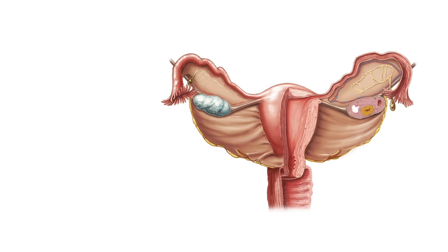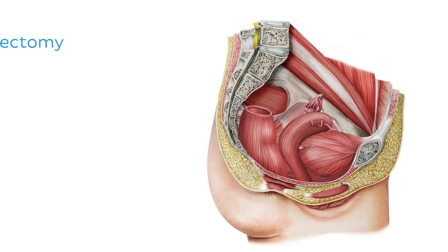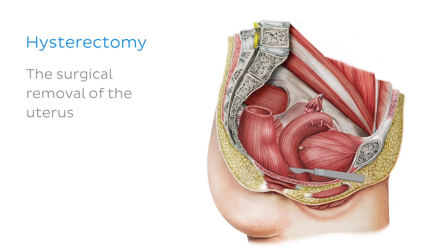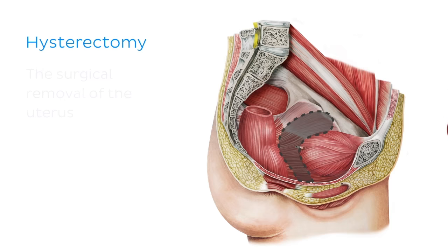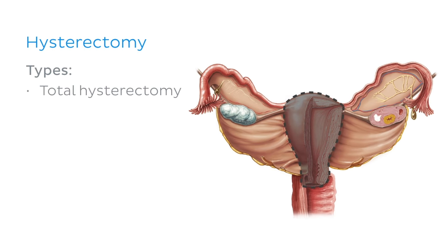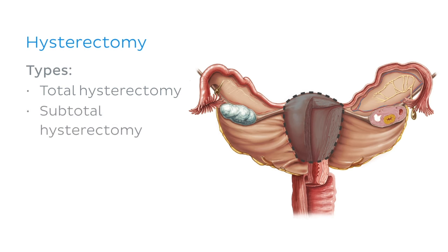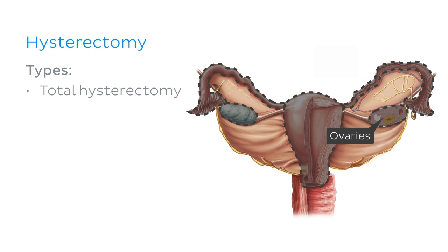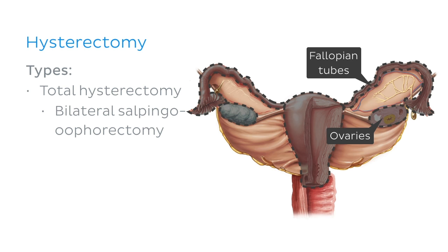Now that we're clued up on the uterus and its functions, let's get clinical. In today's clinical notes, we're going to talk about a procedure known as a hysterectomy. A hysterectomy is the surgical removal of the uterus and there are several types. If the entire uterus is removed, it is a total hysterectomy. If only part of the uterus is removed, it is called a subtotal hysterectomy. Sometimes the ovaries and fallopian tubes are also removed, which is known as a total hysterectomy and bilateral salpingo-oophorectomy.